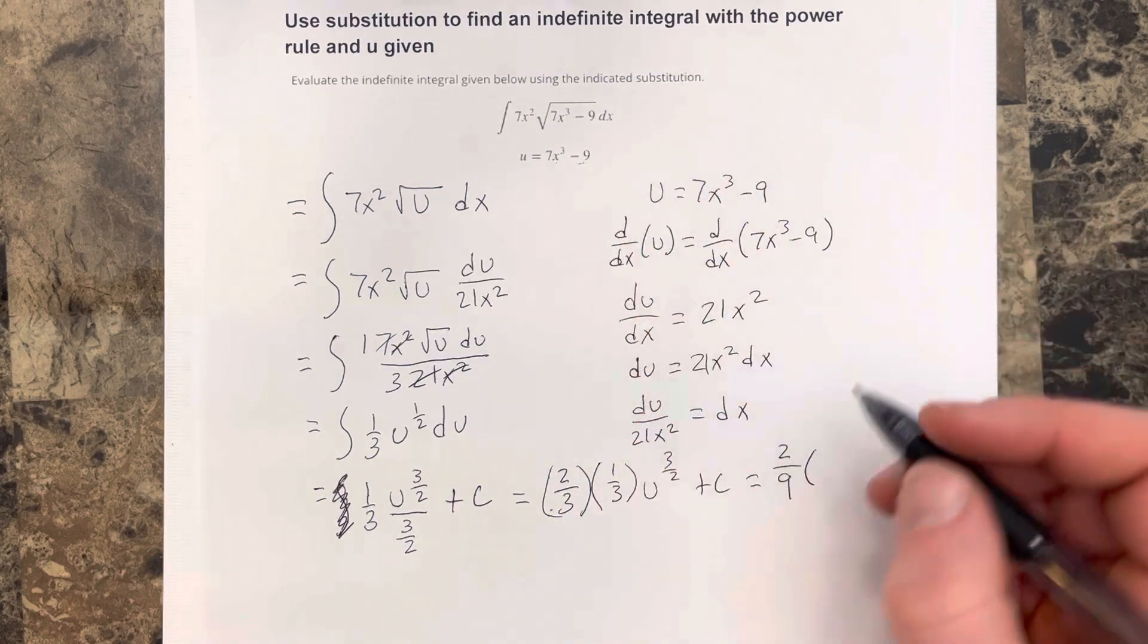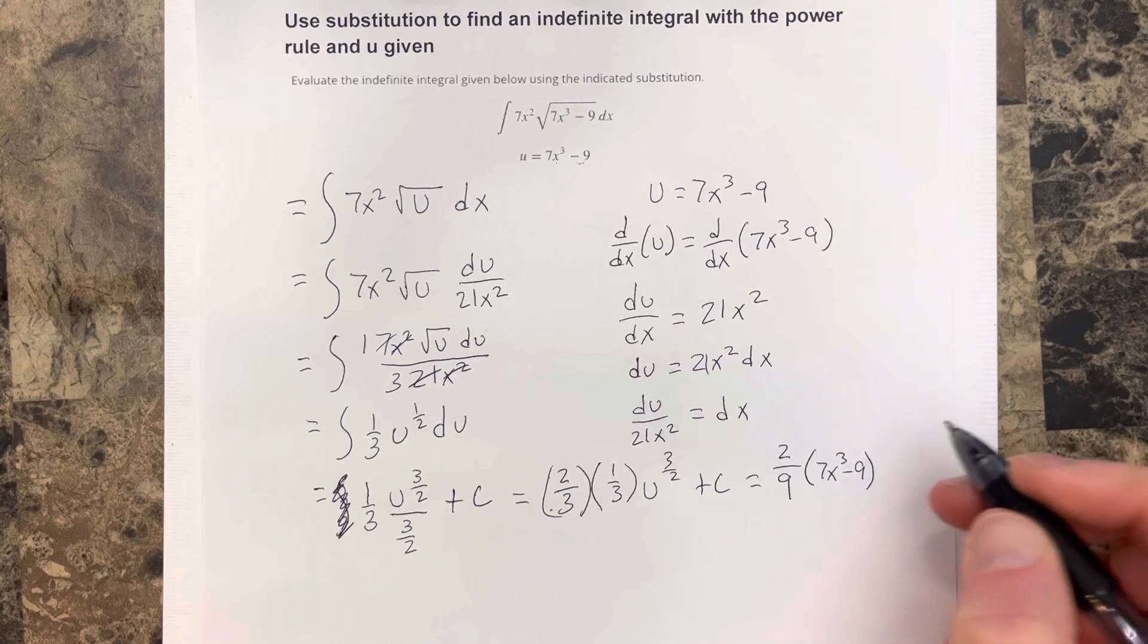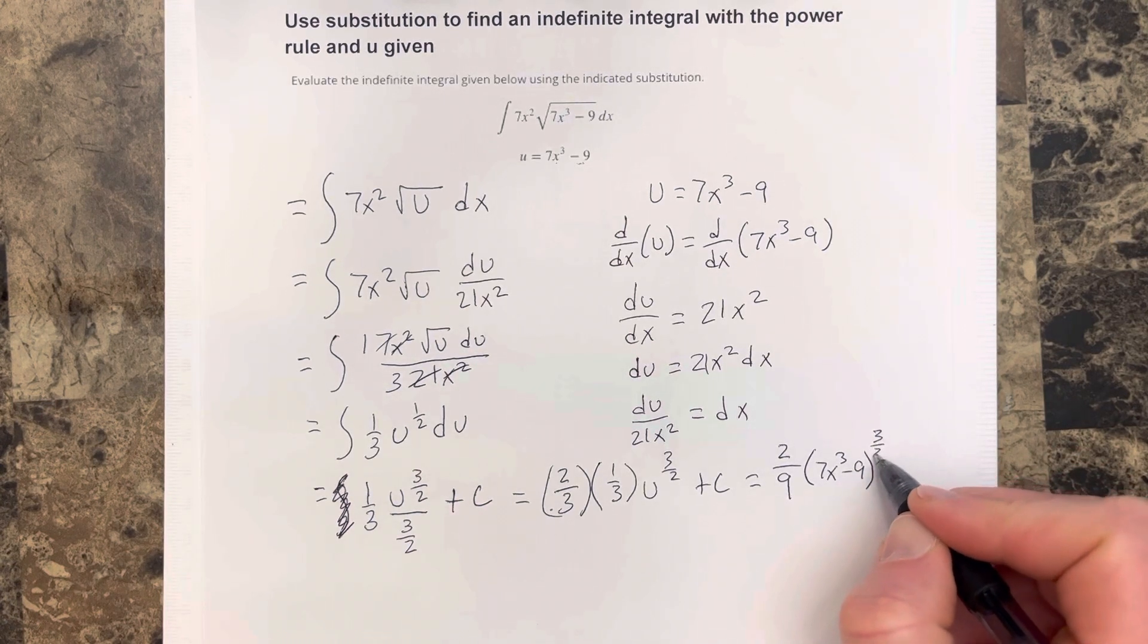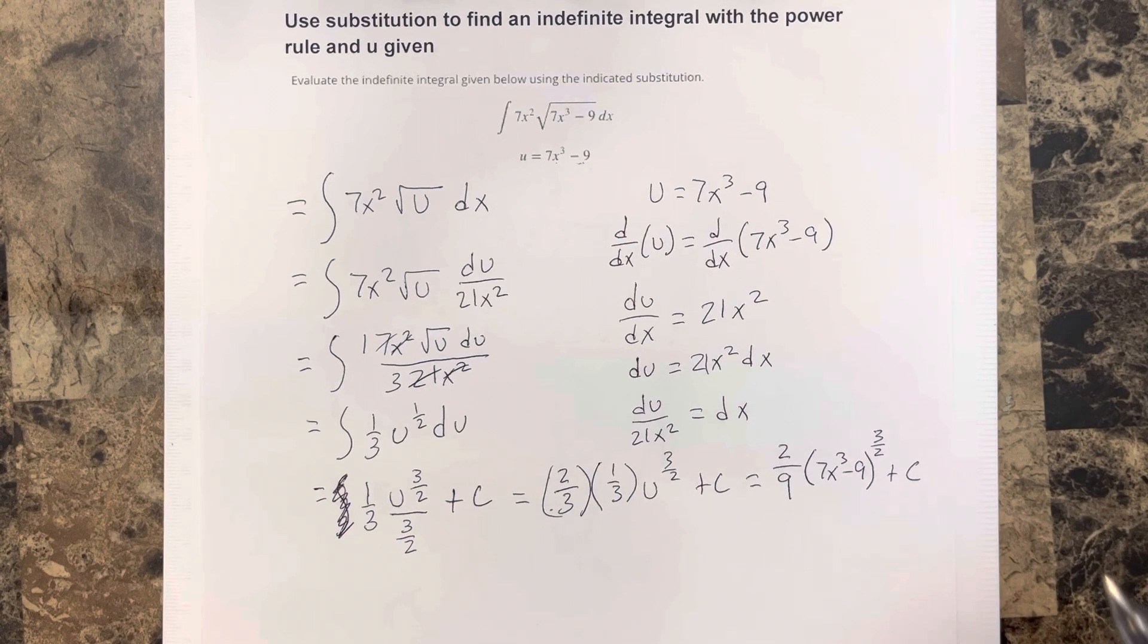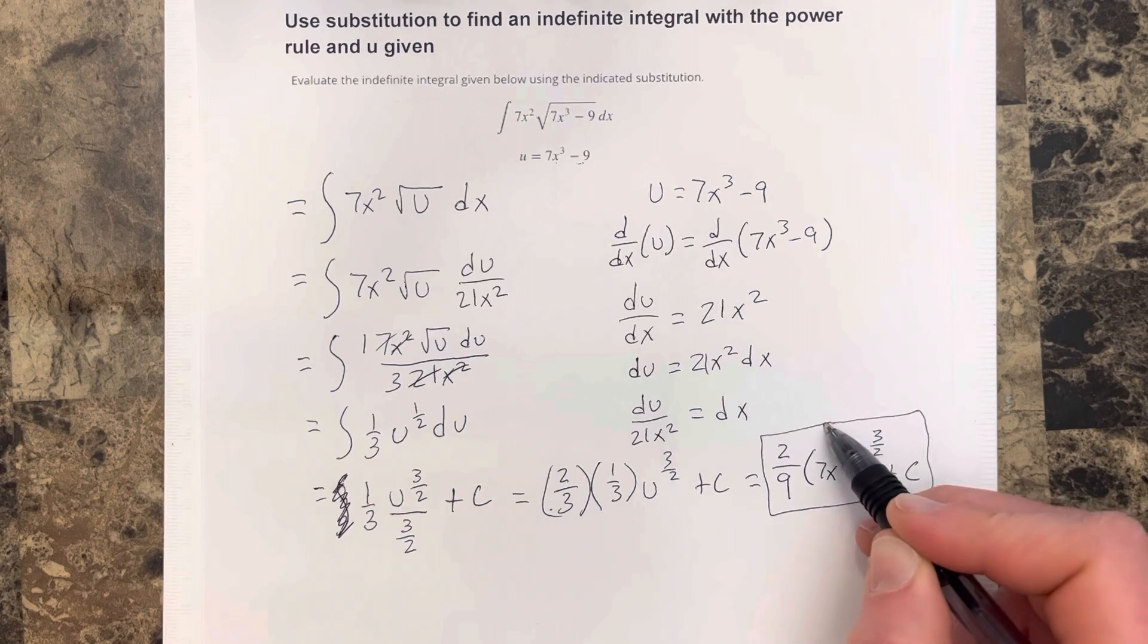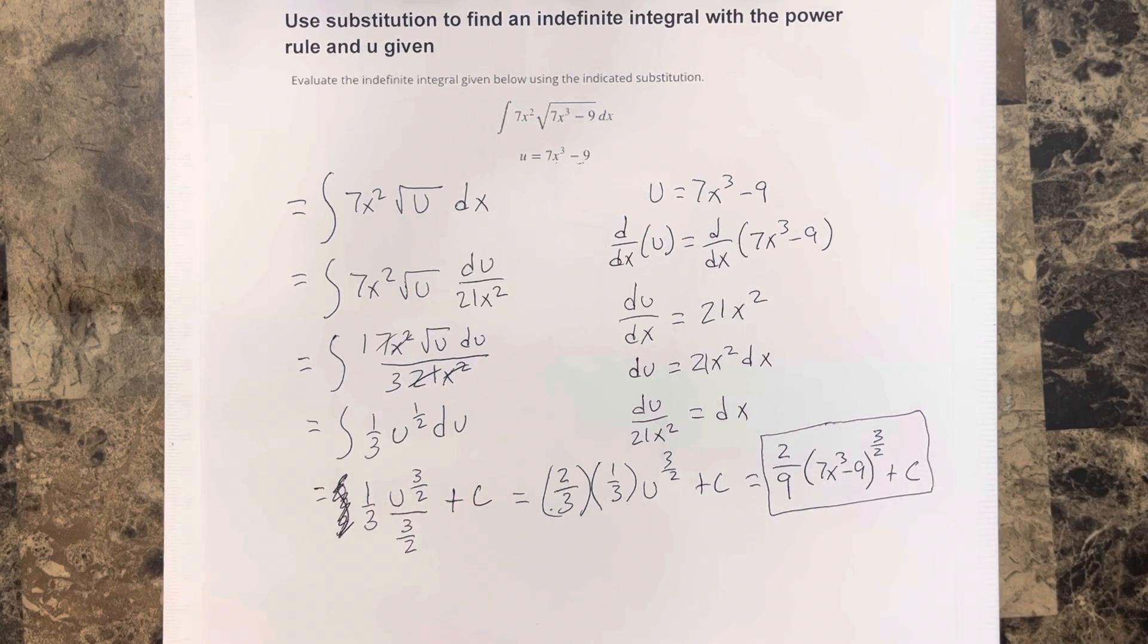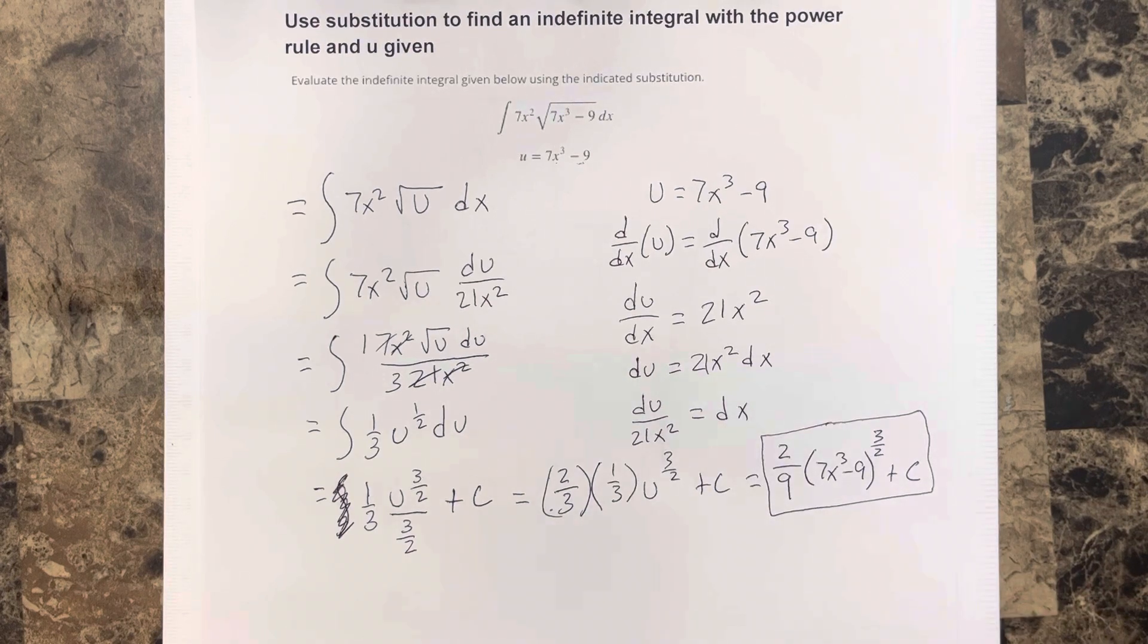u was 7x cubed minus 9. So I'm going to write 7x cubed minus 9 to the 3 halves plus c. And this is our final solution after we take the integration. So that's our integration for our indefinite integral. Thank you.